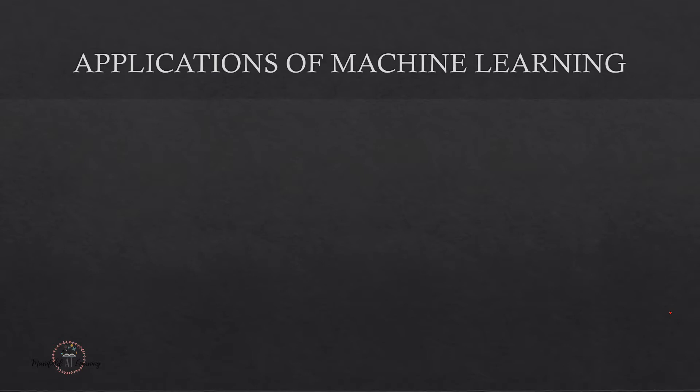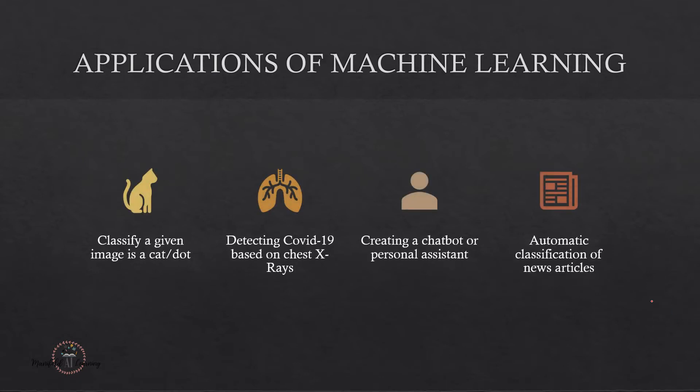Machine learning is actually being used in various domains. An example is using machine learning or deep learning models to perform image classification. A classic example: suppose I have an image of a cat — I give this image to my machine learning model and it helps determine whether the given image is a cat or a dog. You can clearly see the level of complexity that image classification can involve.